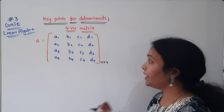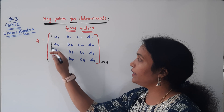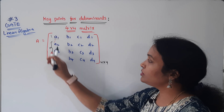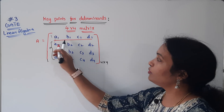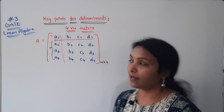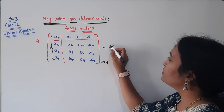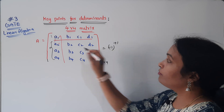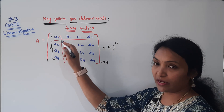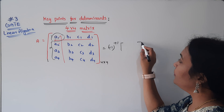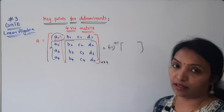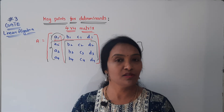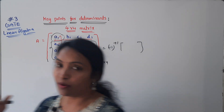We will solve element by element. If we have 0s, we remove that column and row. We say minus 1 to the power of i plus j for the 1,1 element — that is minus 1 to the power of 1 plus 1 — multiplied by the determinant of the remaining matrix. This is the cofactor expansion logic.